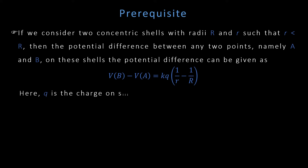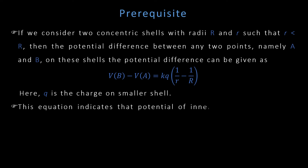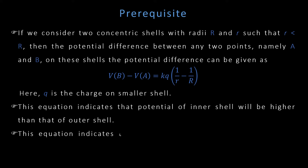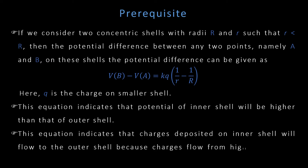This in turn says that VB will always be greater than VA. Hence, if you deposit charge on the inner shell and if there is contact between the inner and outer shell, charges will automatically flow from the inner shell to the outer shell, because charges flow from higher potential to lower potential. With a small amount of charge deposited on the inner shell, the potential of the inner shell will increase, and if the potential is more than the outer shell, then automatically charges on the inner shell will be passed to the outer shell.